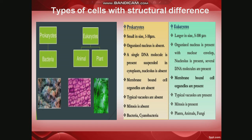Prokaryotes are generally small in size, whereas eukaryotes are larger. In prokaryotes, an organized nucleus is absent; in eukaryotes, an organized nucleus is present. In prokaryotes, a single DNA molecule is suspended in the cytoplasm with no nuclear membrane; in eukaryotes, an organized nucleus with a nuclear envelope and nucleolus is present, with several DNA molecules inside. Prokaryotes lack membrane-bound cell organelles and vacuoles, and mitosis is absent; eukaryotes have membrane-bound organelles, vacuoles, and mitosis. Examples of prokaryotes are bacteria and cyanobacteria (blue-green algae); examples of eukaryotes are plants, animals, and fungi.